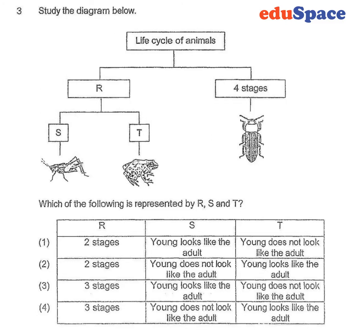In question 3, we have the life cycle of animals. We can tell that frog and grasshopper, they are both three stages. What's the difference between these two is that the young of the frog, which is a tadpole, does not resemble the adult.